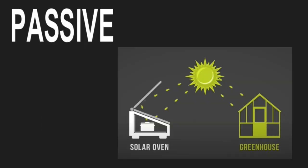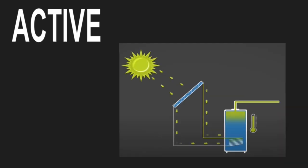Passive systems are more basic systems and have no moving parts — they simply depend on the design to capture the sun's heat or sun's rays, as shown in the picture. Examples could be a solar oven or a greenhouse. Active systems have mechanical components like fans or pumps to circulate the heat-carrying fluids which are in the system.